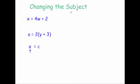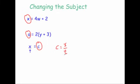Before we can change the subject we need to know what the subject is. Here x is the subject because it's on its own — you've got x equals something. As a subject it's on its own on one side of the formula. In this formula c is the subject because you've got x over t equals c, and it can also be written as c equals x over t. So the subject of a formula is the variable on its own on one side.